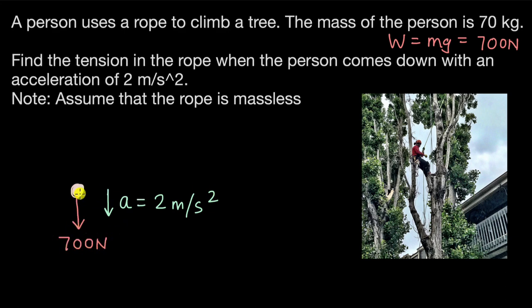And we are trying to draw the free body diagram of the person because we know the acceleration with which the person is coming down. So it's better that we draw the free body diagram of the person. We also know the weight. We need to figure out the tension in the rope.